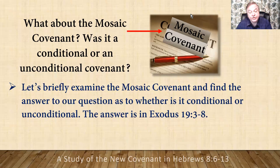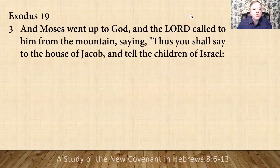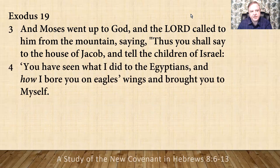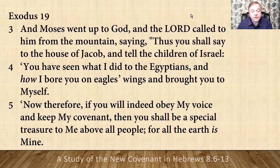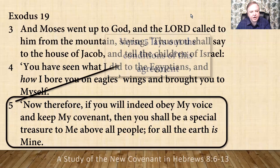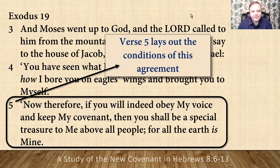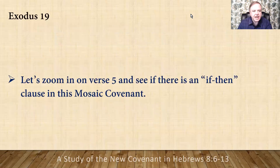Let's briefly examine the Mosaic covenant and find the answer in Exodus 19, verses 3 through 8. "And Moses went up to God, and the Lord called to him from the mountain, saying, 'Thus you shall say to the house of Jacob and tell the children of Israel: you have seen what I did to the Egyptians, and how I bore you on eagles' wings and brought you to myself. Now therefore, if you will indeed obey my voice and keep my covenant, then you shall be a special treasure to me above all people, for all the earth is mine.'" Verse 5 lays out the conditions of this Mosaic covenant. Let's see if there's an if-then clause in this covenant.